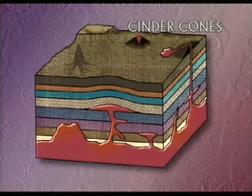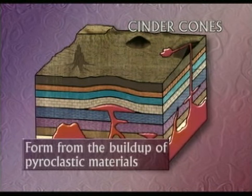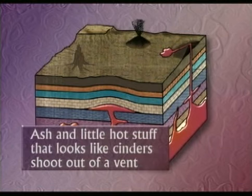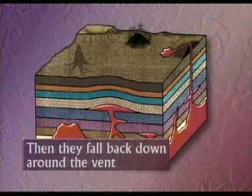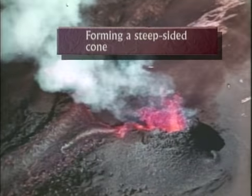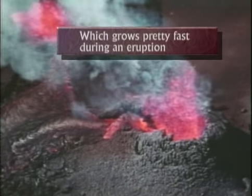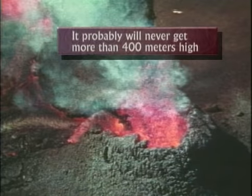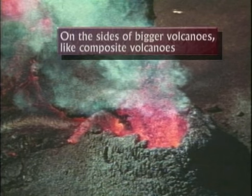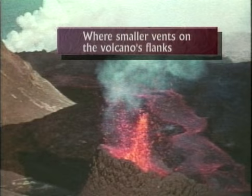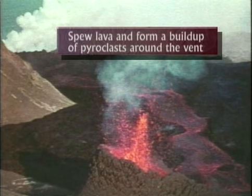Cinder cones are volcanic edifices that form from the buildup of pyroclastic materials. Ash and little hot cinders shoot out of a vent — an opening in the ground — and fall back down around the vent, forming a steep-sided cone. These cones can grow quickly during an eruption but will probably never get more than 400 meters high. You can often find cinder cones on the sides of bigger volcanoes, like composite volcanoes.